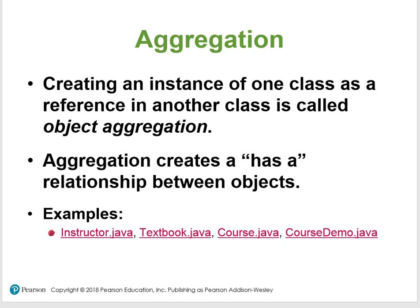The actual lab I'm going to have you do for this one is the parking ticket, the parking meter, and the police as well. But by definition, creating an instance of one class as a reference in another class is called object aggregation.